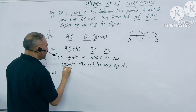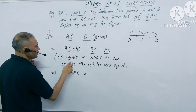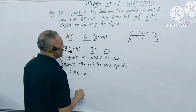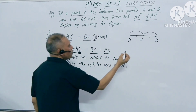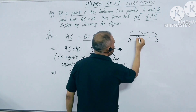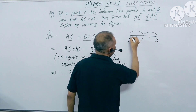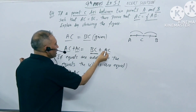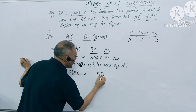Now, AC plus AC is 2AC. On the other side, BC plus AC — BC is this segment and AC is this segment. If we add BC and AC, this becomes AB. So 2AC equals AB.